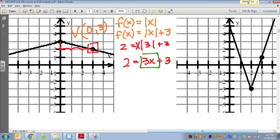Now, something plus 3 equals 2. So in order to find out what that is, just like regular algebra, we subtract 3. We get negative 1 equals 3x. And then we divide by 3. x equals negative 1 third.